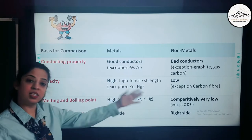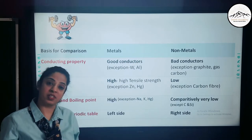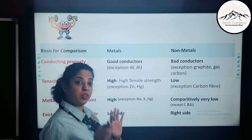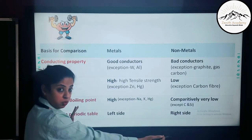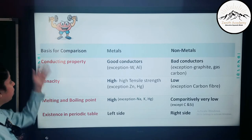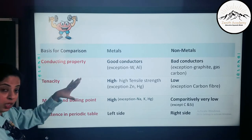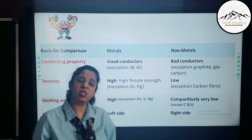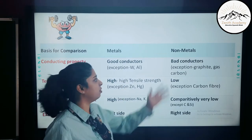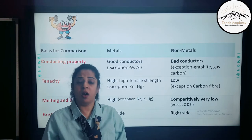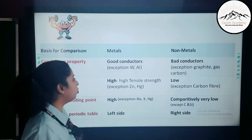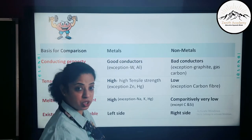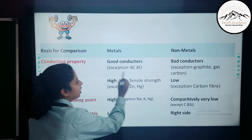Now let us compare metals and non-metals, starting with physical differences. Students, always remember: in your ICSE board examination, whenever a 'difference between' question is given, you must make three columns — one for the basis of differentiation, one for metals, and one for non-metals. For your tenth grade, you must learn the exceptions very well, because board exams most often ask about the exceptions.